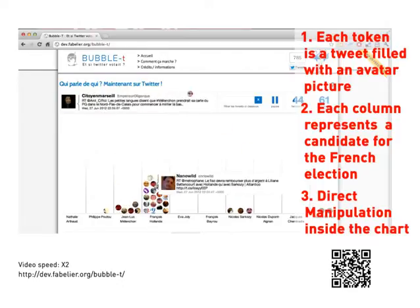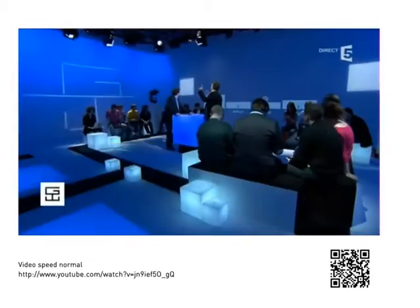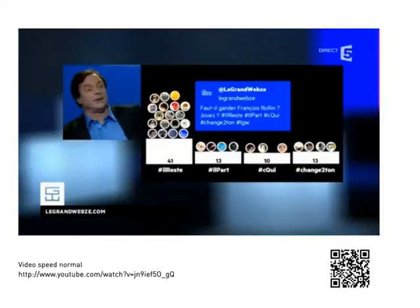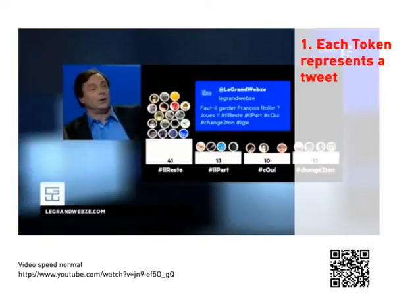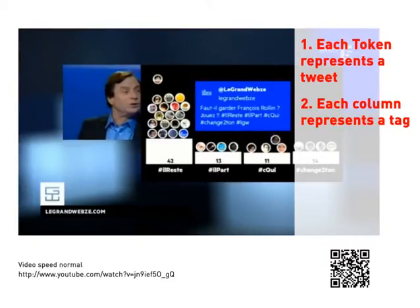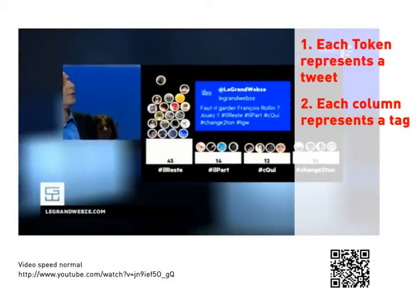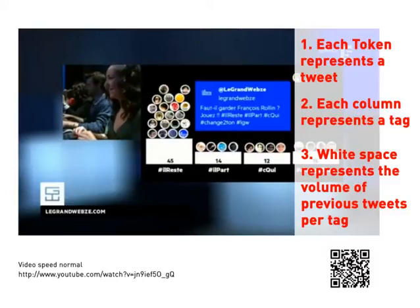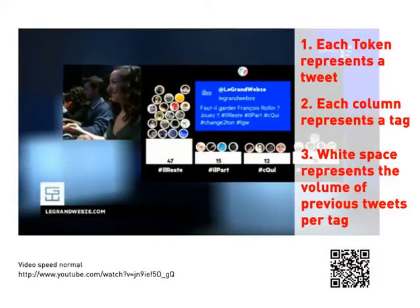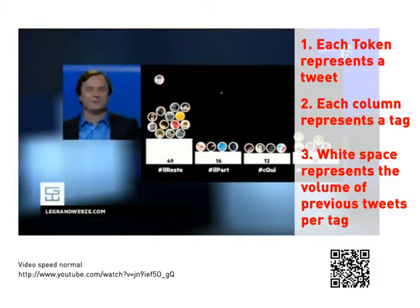Direct manipulation is available inside the bar chart. Bubble TV is a social TV application deployed on French national television. Each token represents a tweet, each column represents a tag, and white space represents the volume of previous tweets per tag.